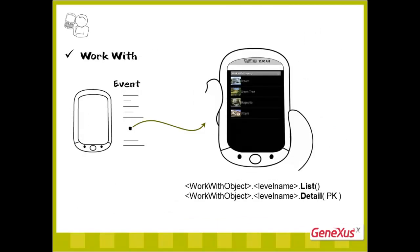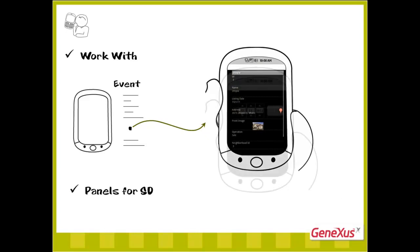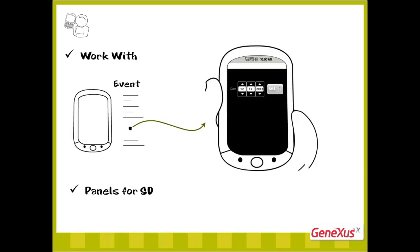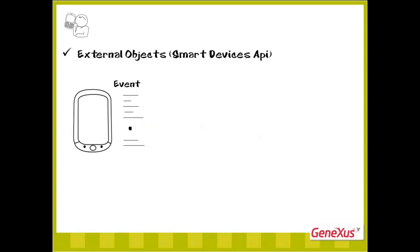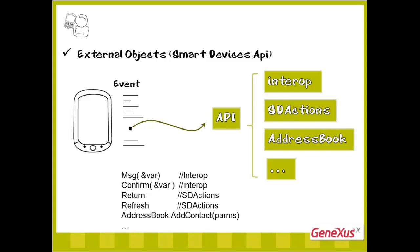We could also simply call the list or the detail in view mode. Or even objects called Panels for smart devices, which are screens with somewhat more freedom than the WorkWith we have seen. Or we could resort to some of the functionalities provided by the APIs, such as displaying a message on screen, requesting the user's confirmation to continue, returning to the caller, refreshing the screen, and adding a contact to the address book, among other possibilities. Note that except for the refresh, all these actions may be solved without having to execute anything on the server.